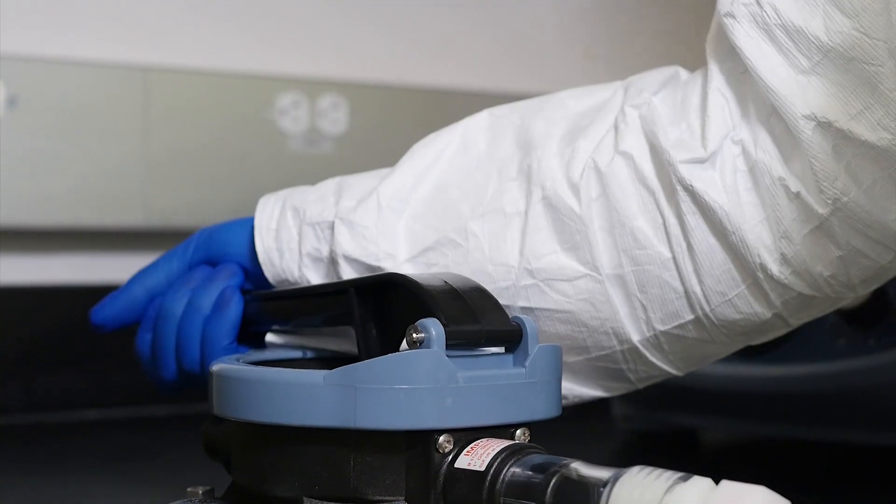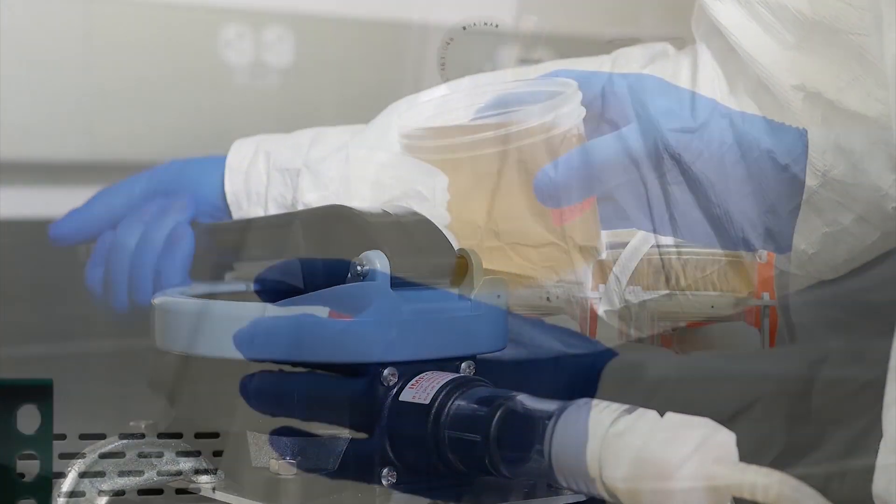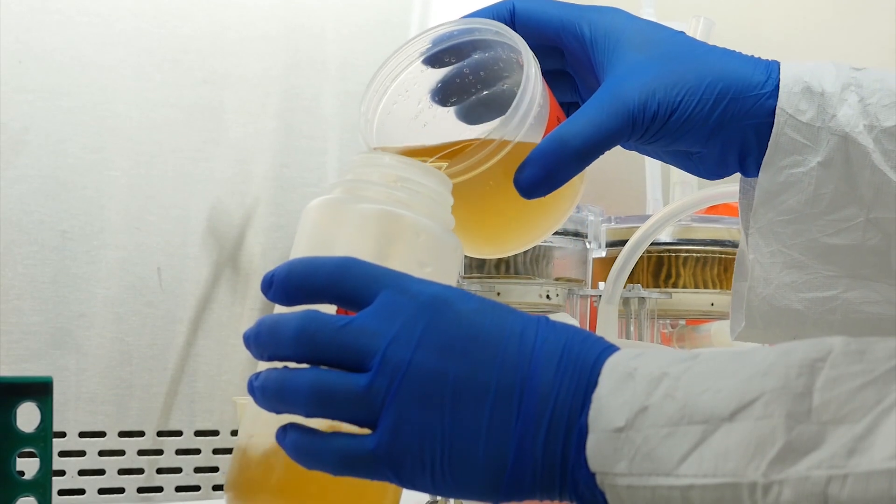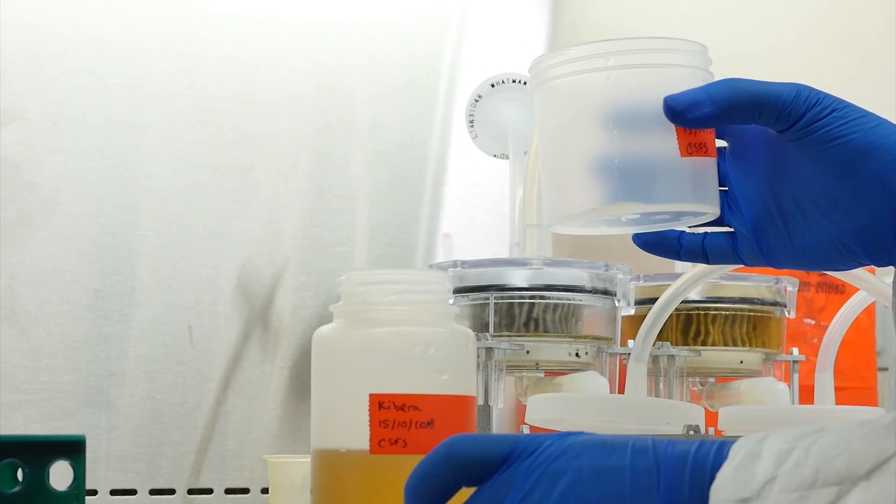If eluent enters the tubing connecting the collection cup to the bilge pump, stop pumping immediately. Empty the eluent into a separate bottle and continue pumping until all liquid has exited the filter.